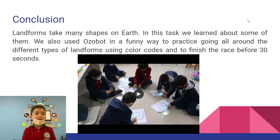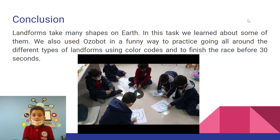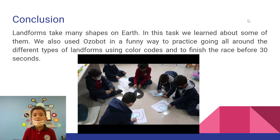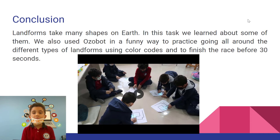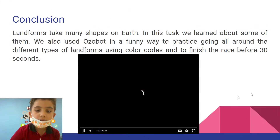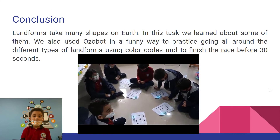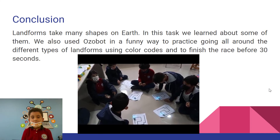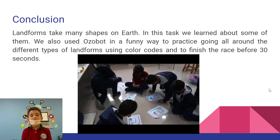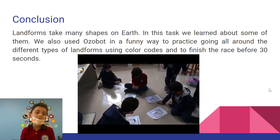Conclusion: Landforms take many shapes on earth. In this task, we learned about some of them. We also used the Ozobot in a fun way to practice going around the different types of landforms using color codes and to finish the race in 30 seconds or less. Here is a video of me and my friends trying to achieve the race, and it looks like most of us are achieving it.